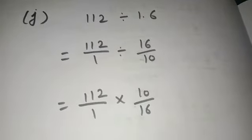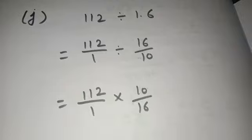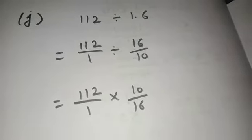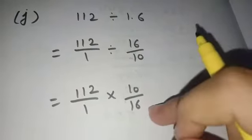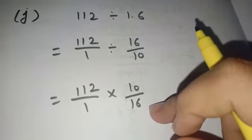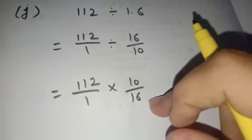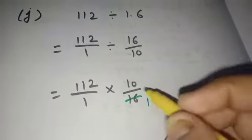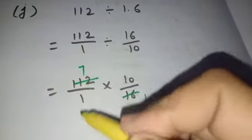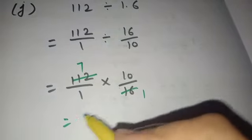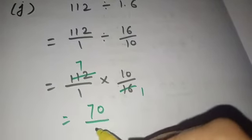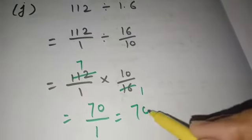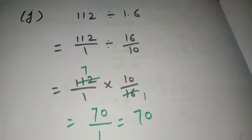J part of the question is 112 divides 1.6. Point has been removed. The reciprocal has been taken by converting the division sign into multiplication. Now try to cancel. 16 goes into 112 seven times. 7 times 10 is 70, 1 times 1 is 1. The answer is 70.